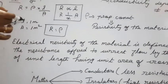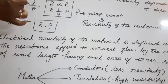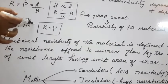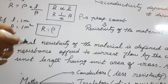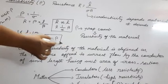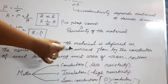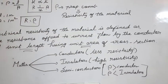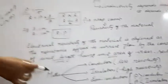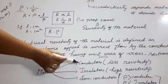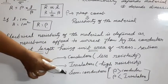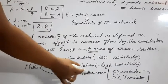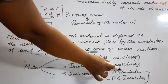Taking l = 1 meter and A = 1 m² in R = ρ·l/A, we get R = ρ. So resistivity is defined as the resistance offered to current flow by a conductor of unit length with unit area of cross-section. The SI unit of ρ is ohm·meter. Based on resistivity, materials are classified into three types: conductors (low resistivity), insulators (high resistivity), and semiconductors (resistivity between conductors and insulators).